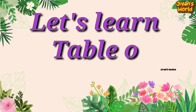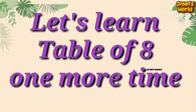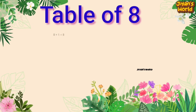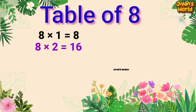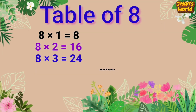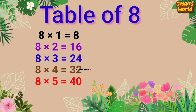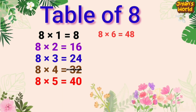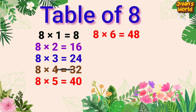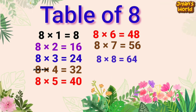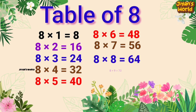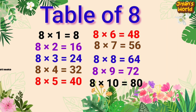Let's learn the table of 8 one more time. 8 1's are 8, 8 2's are 16, 8 3's are 24, 8 4's are 32, 8 5's are 40, 8 6's are 48, 8 7's are 56, 8 8's are 64, 8 9's are 72, 8 10's are 80.